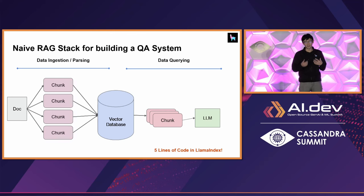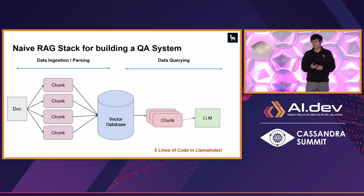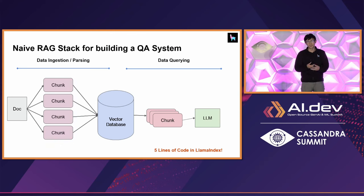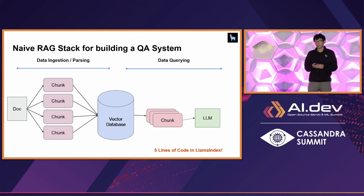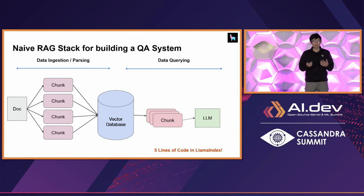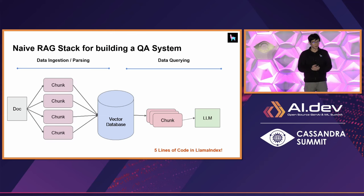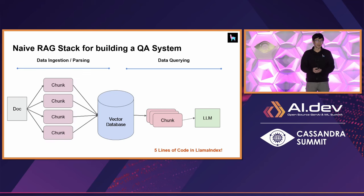The vector database itself contains embeddings as well as the source documents. During data querying, when the user asks a question or has a task, you do retrieval and then synthesis to pull information from the storage system into the context window of the model. This framework captures the fact that you don't need to train these models — you just need to prompt them the right way. In LlamaIndex, you can do this through the quick start in five lines of code, with deeper tutorials available for both simple and advanced levels.